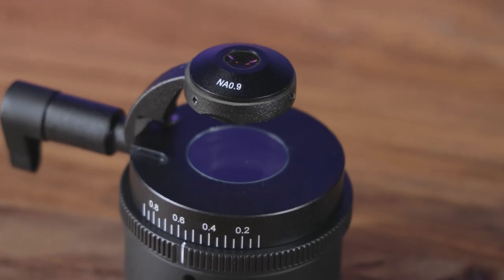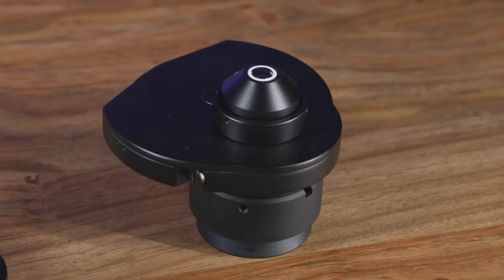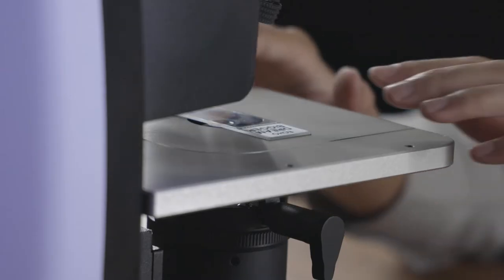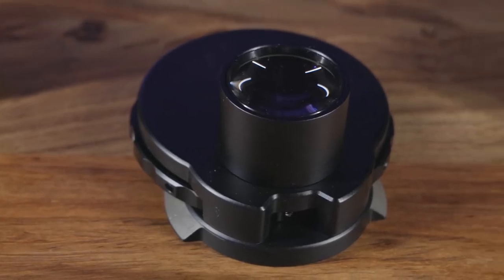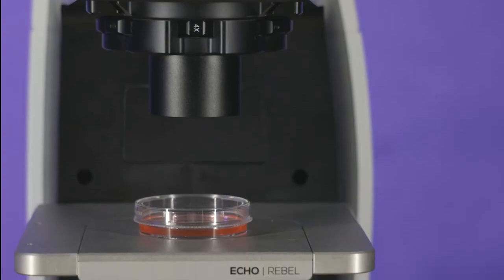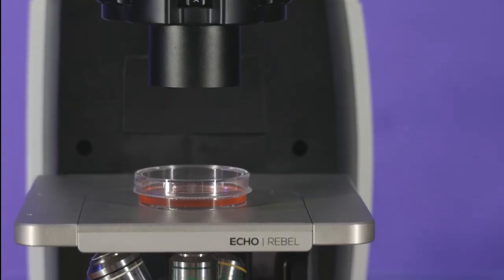REBEL has three condenser options: a high-resolution flip-out phase condenser for viewing glass slides in the upright configuration, or a long working-distance condenser for brightfield or phase applications in upright or inverted.